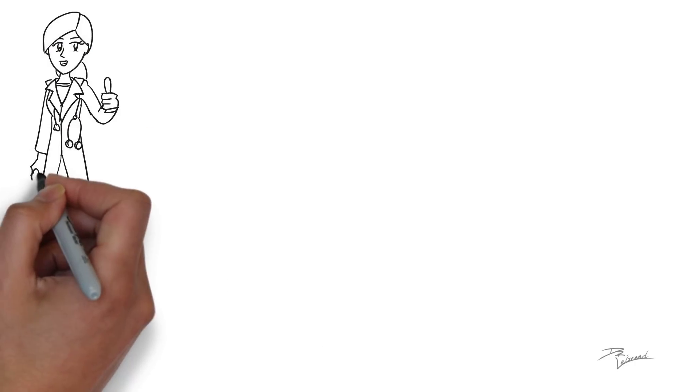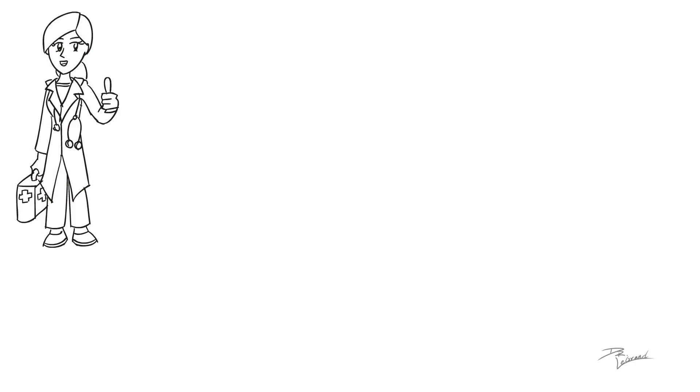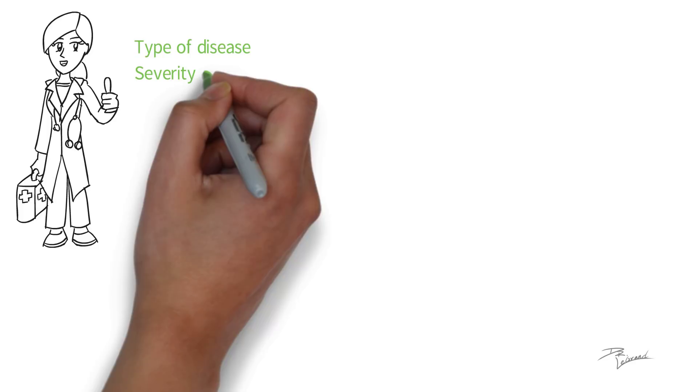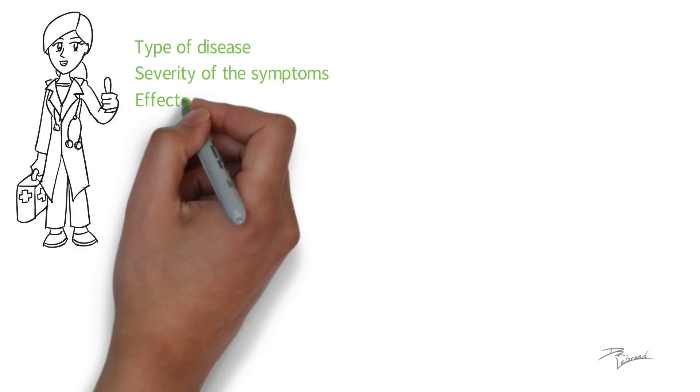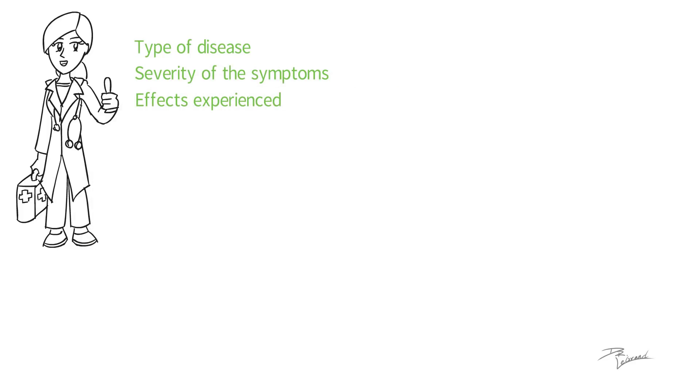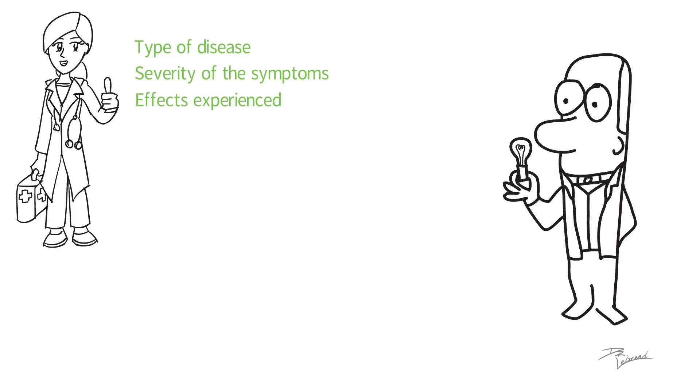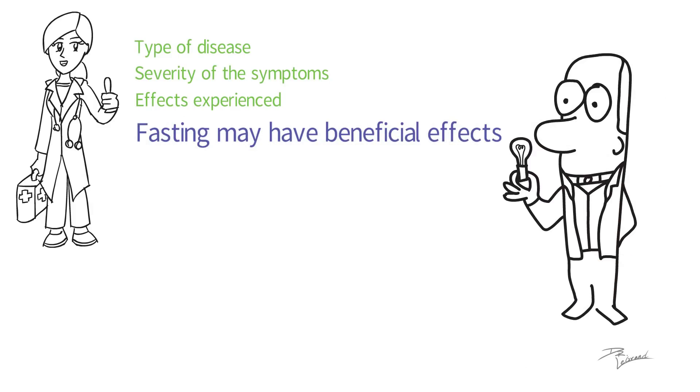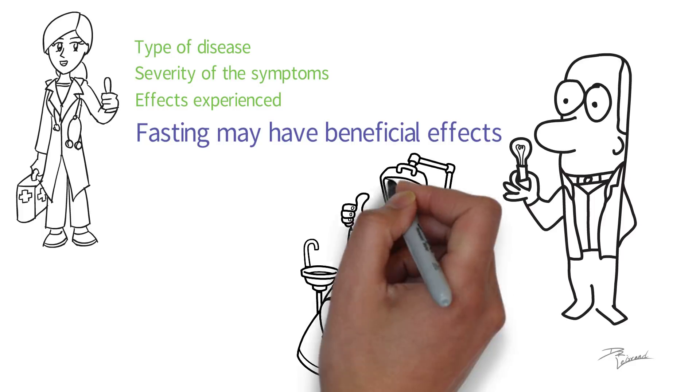There are different ways that kidney diseases can be treated. The specific treatment protocol depends on the type of disease, as well as the severity of the symptoms and effects experienced by the patient. In some studies, scientists have suggested that fasting may have beneficial effects for people with existing chronic kidney disease.